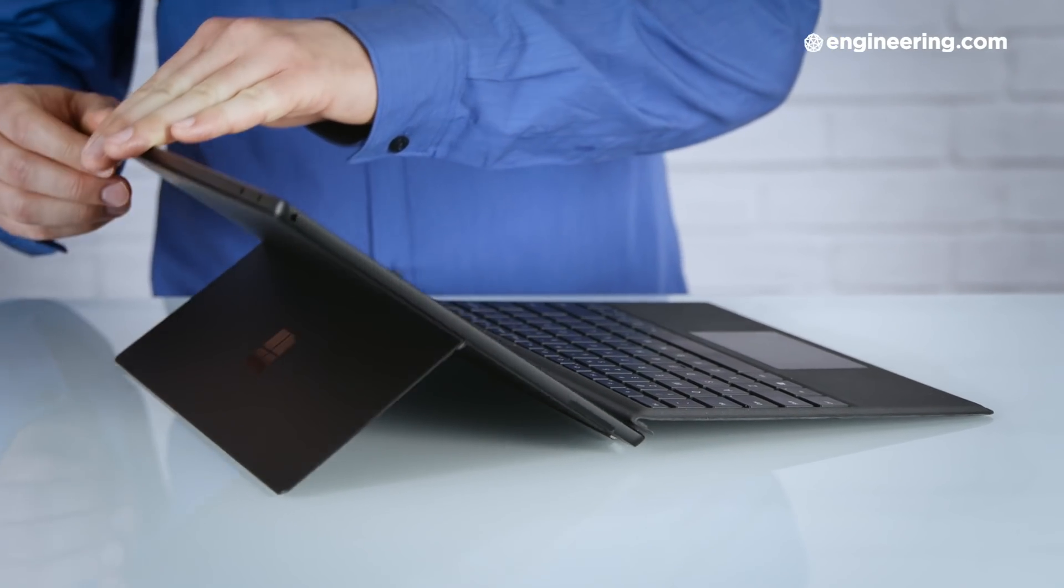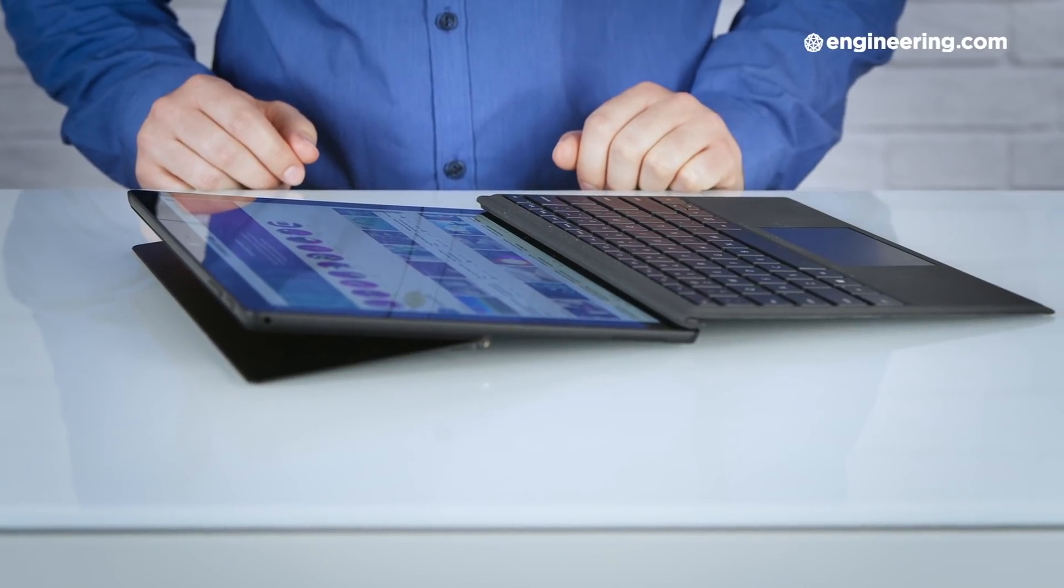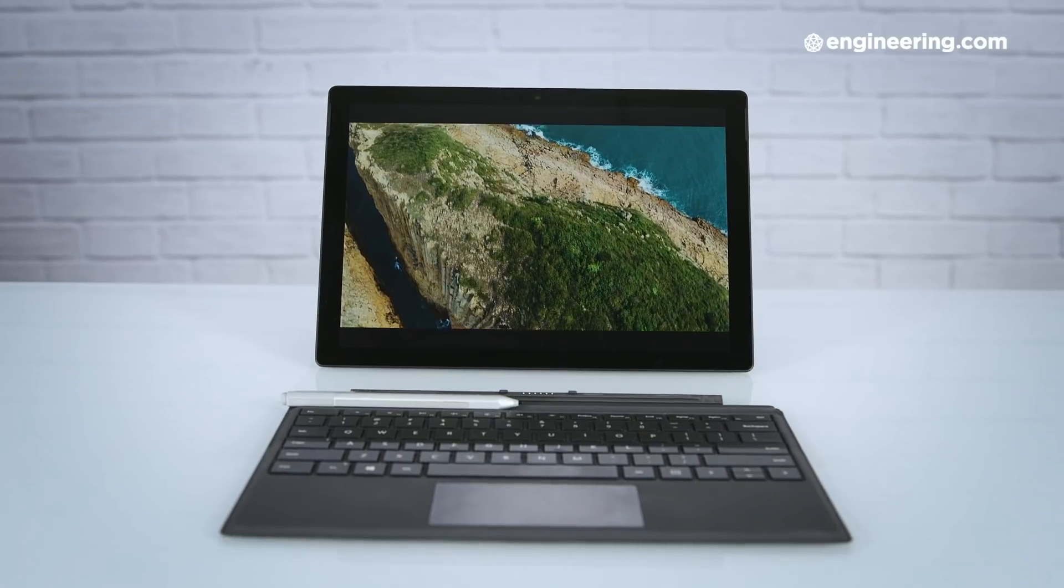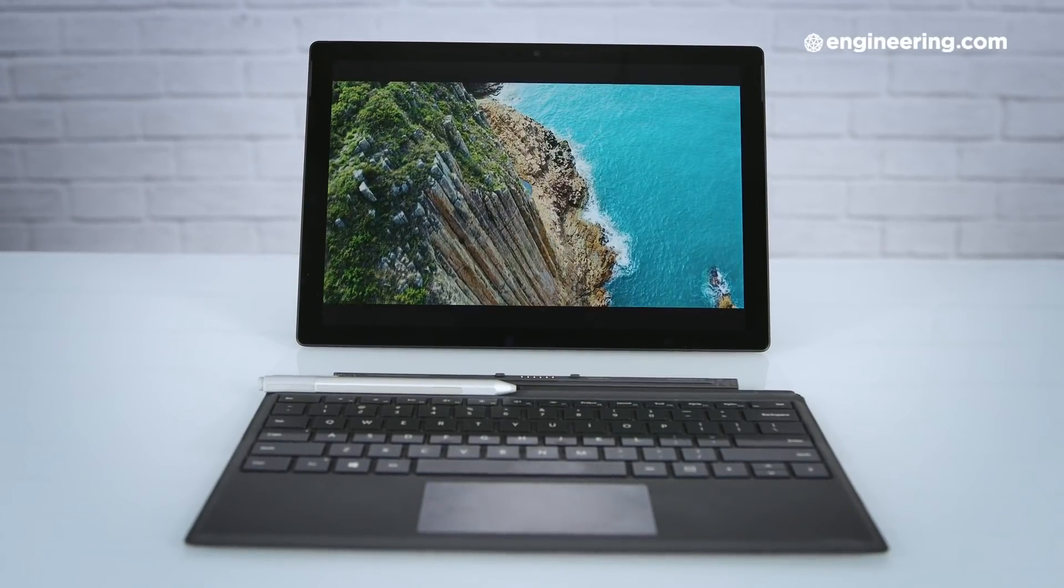The SP6 has a very smooth and stable hinge on the back that can position the screen at almost any angle you want, and this, along with the Surface Pen, makes the SP6 a great device for note-taking or drawing, or annotating PDFs, or whatever. There's a lot of devices out there that go for the tablet-laptop hybrid, but in my opinion none find that balance better than the Surface Pro.